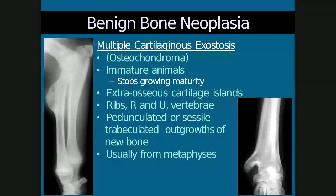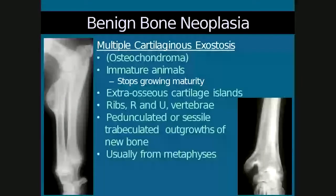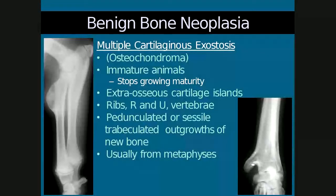Multiple cartilaginous exostosis is the term for multiple lesions, while osteochondroma refers to a single lesion. These neoplasms typically occur in immature animals and stop growing at maturity. They consist of extra-osseous cartilage islands that may initially be radiolucent and mineralize with time. The theory is that cartilage from the physis herniates at 90 degrees to the bone and eventually mineralizes, which is why these are commonly found in the metaphyseal area adjacent to the physis. They can be pedunculated or sessile.